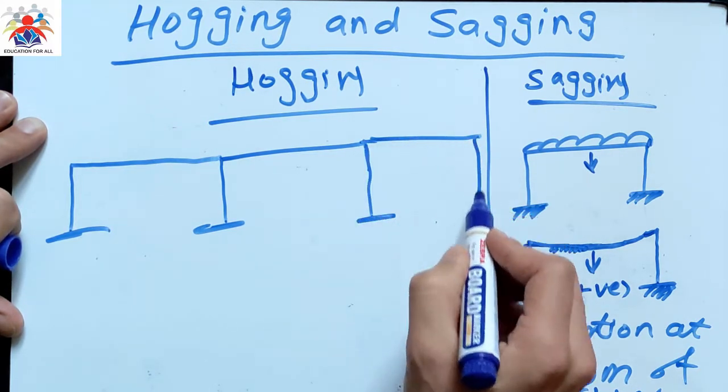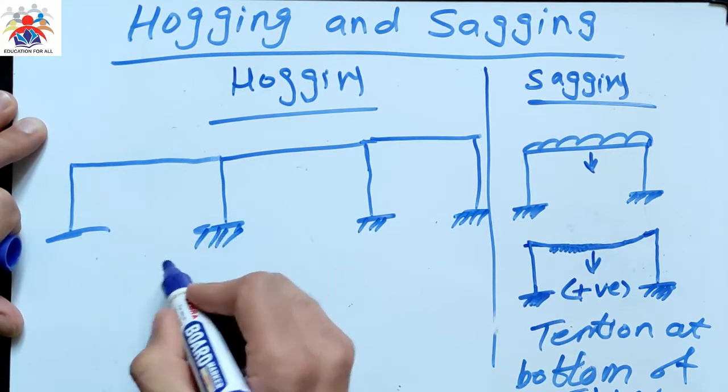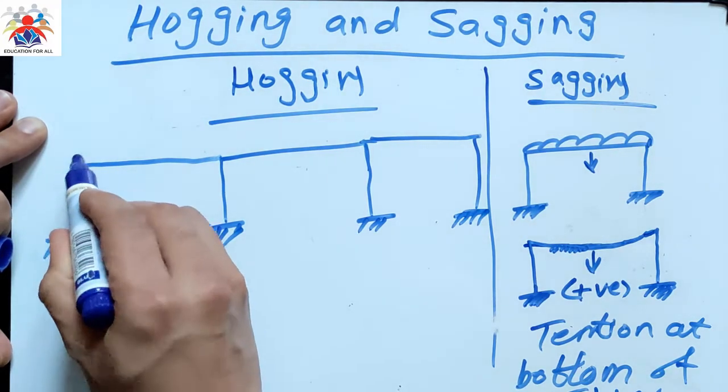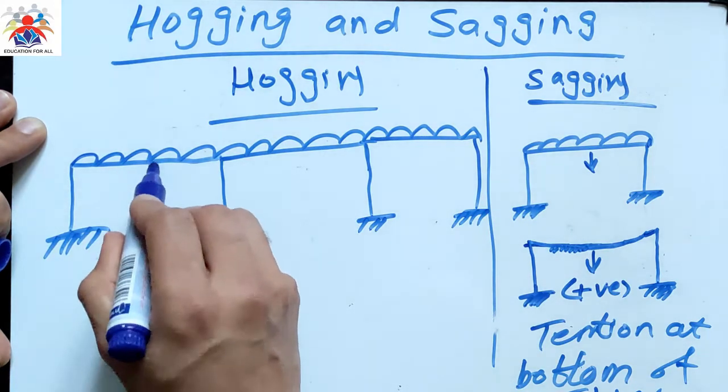Take an example of a bridge with so many pillars or so many piles, for example. So we have a UDL, uniform distributed load, acting downwards.